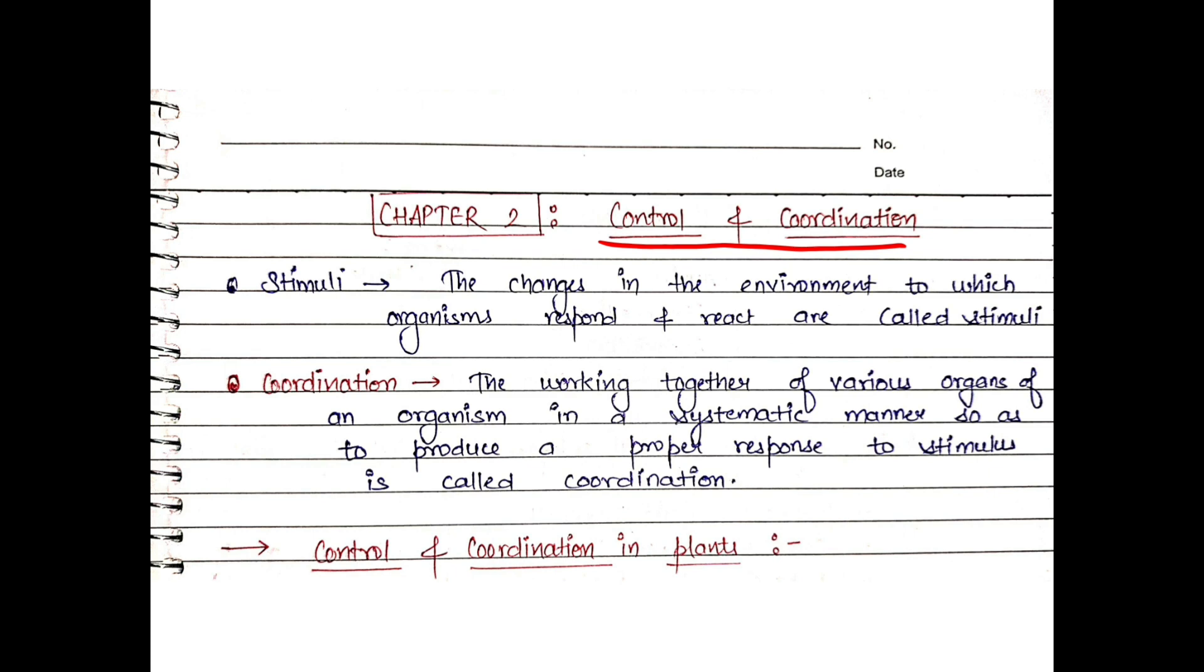We will study this in control and coordination. Two terms are important: stimuli and response. Stimuli are changes in the organism's surroundings that force the organism to react or respond. These are called stimuli. The reaction given against stimuli is called response. Then there is coordination, which means various organs working together in a systematic manner so that proper response is given to the stimuli.